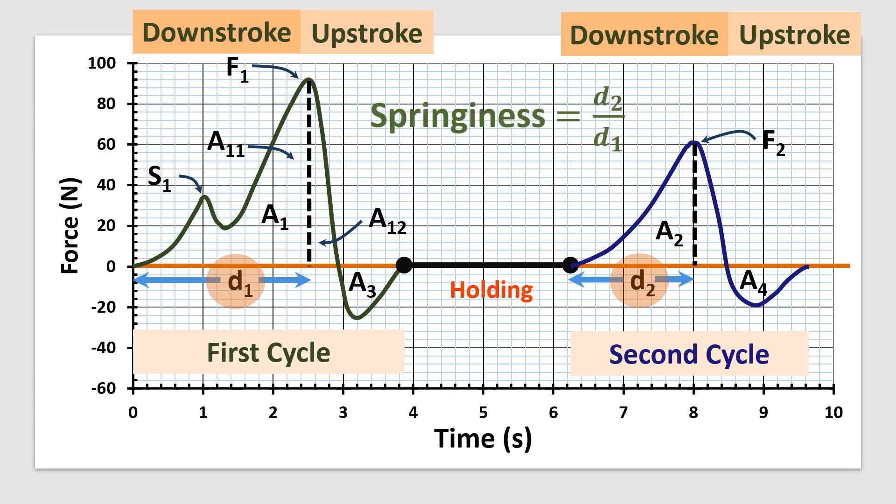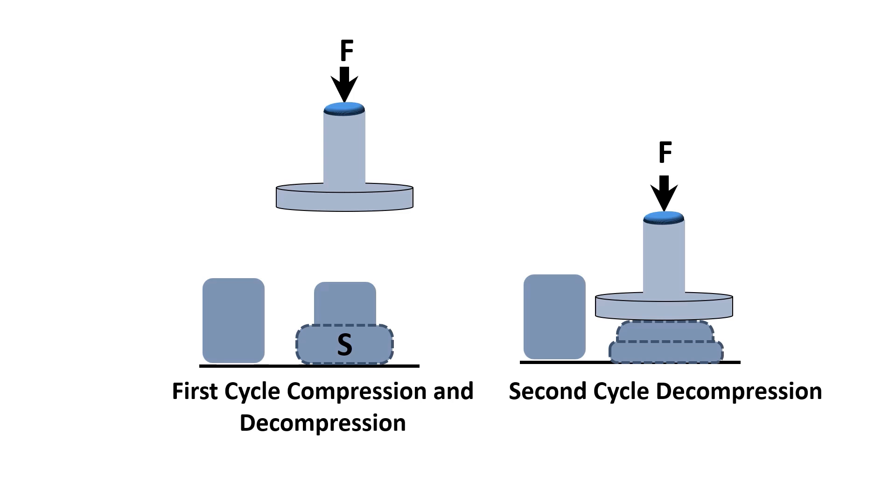Therefore, springiness is the ability of a food to come back to its original size and shape. We could understand the springiness in this slide. We could have first cycle compression and decompression, and then second cycle compression and decompression. Now we can see d1 and d2, and we could calculate springiness as d2 by d1.